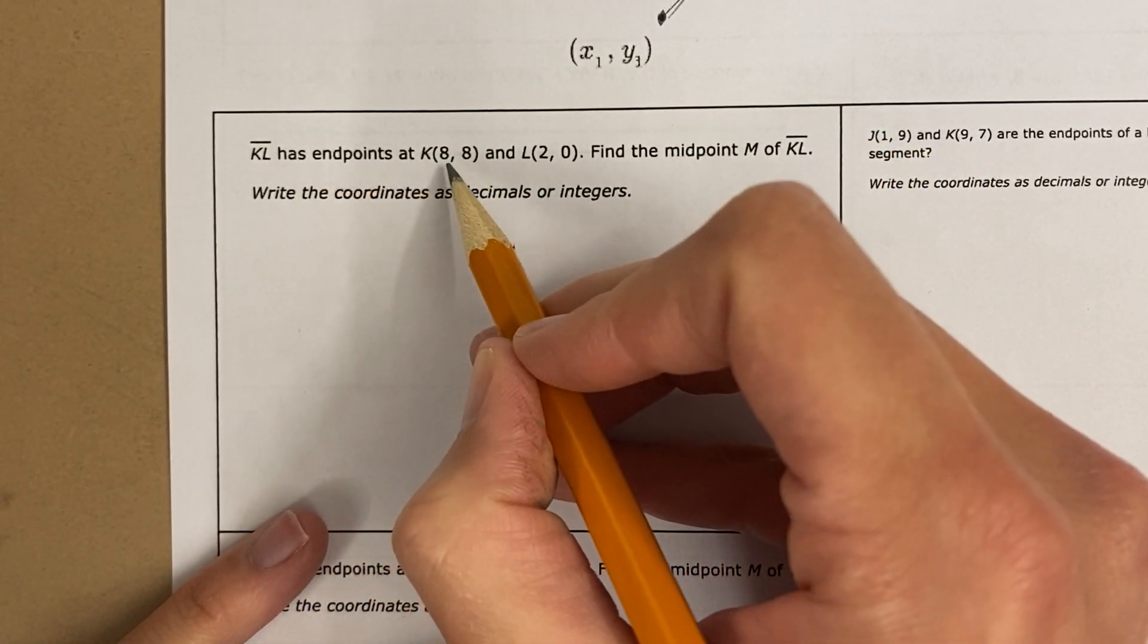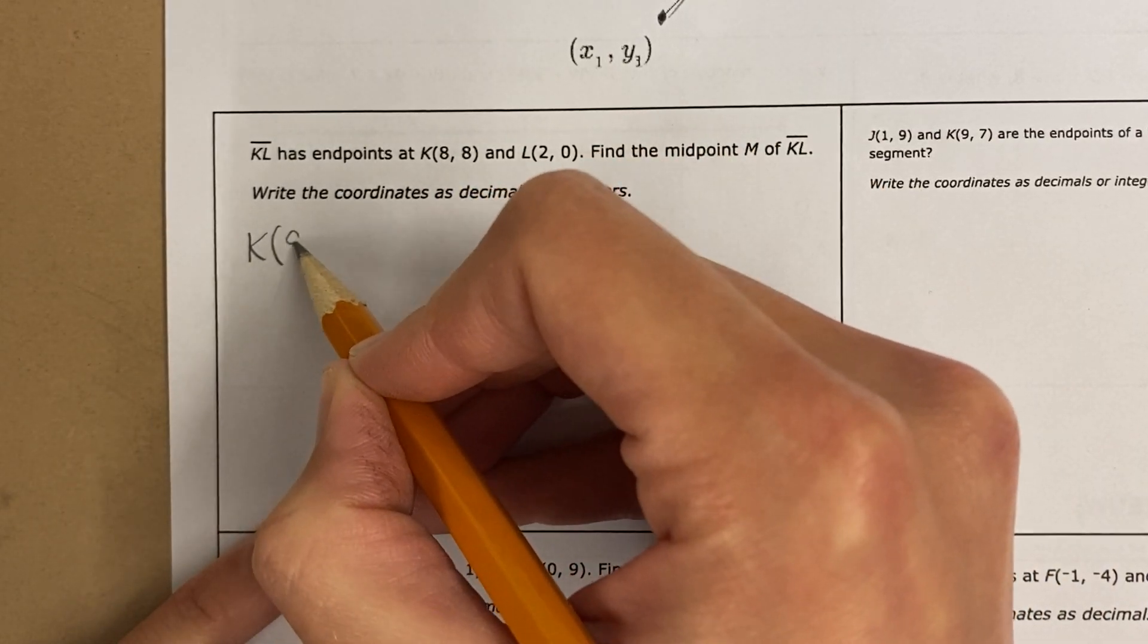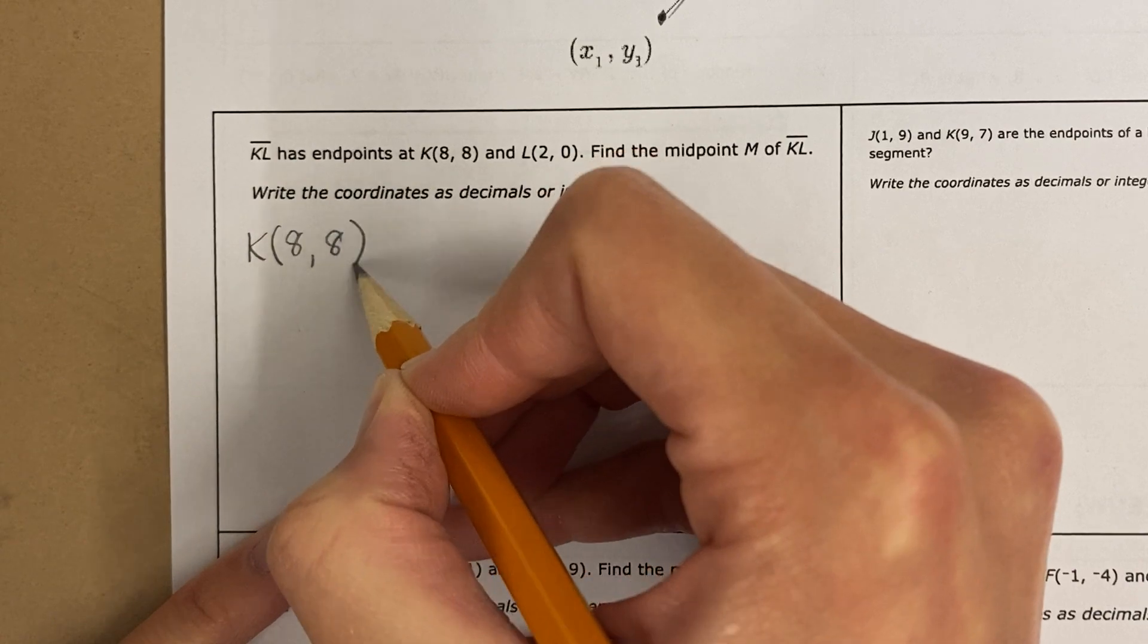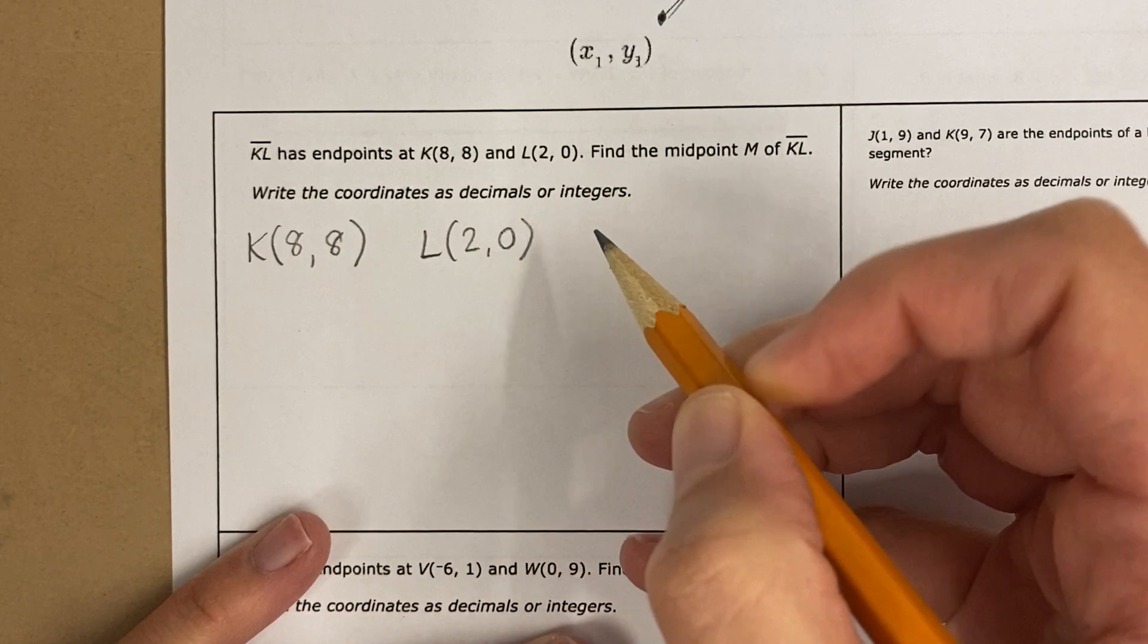So KL has endpoints K, so we're going to say k is 8, 8, and I'm going to rewrite it here, and L is 2, 0.